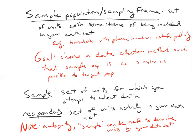But why do I have two separate terms — the units that you attempt to collect data on, and the respondents who you actually collect data on? That's because in many cases those things will be different. You'll have the sample population of all people walking by the table you set up in front of the Science Center, you'll attempt to reach some of them, and some will say yes and some will say no.